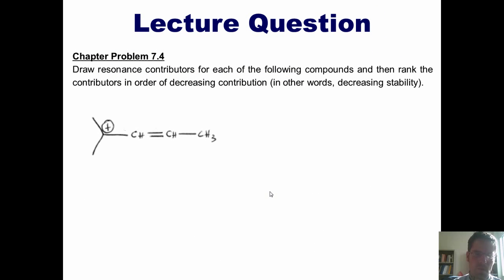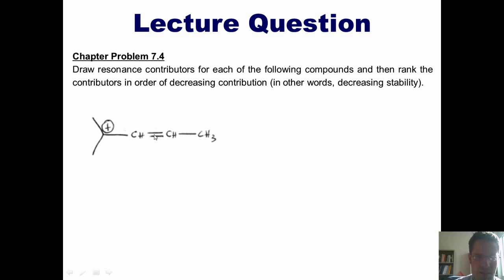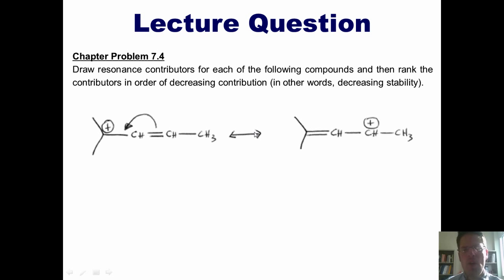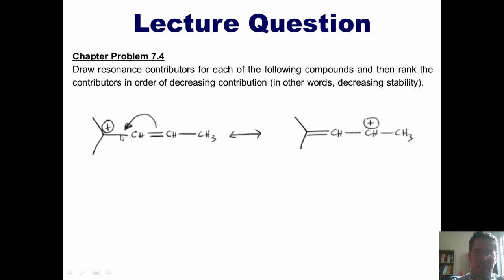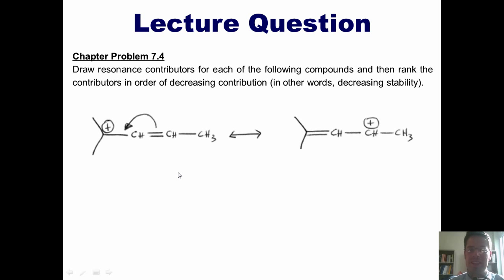Here's the first one. Let's see if we can draw resonance contributors. This is a positive charge on a carbon, which means that carbon only has six electrons around it. These pi electrons can swing like a door on a hinge to form a carbon-carbon double bond, leaving me with a positive charge on the internal carbon. Which of these two structures is the greatest resonance contributor? Both have charges and neither has a scenario where everything can have a full octet. The resonance contributor on the left has a tertiary carbocation, while the one on the right has a secondary. Tertiary is more stable than secondary, hence the structure at the left is the greater resonance contributor.